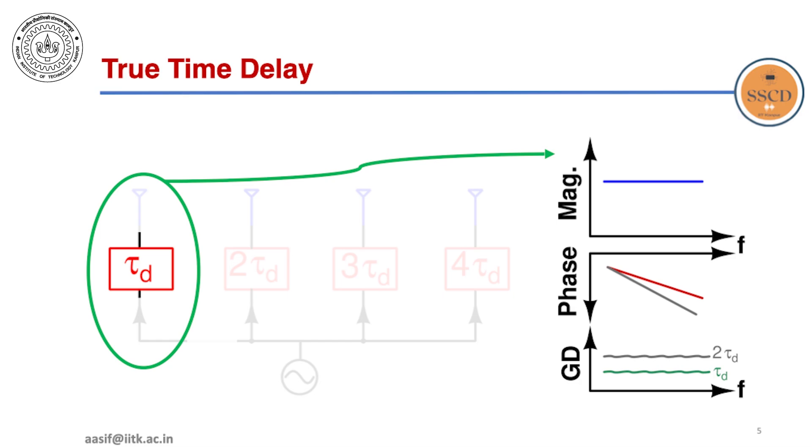The problem boils down to efficient implementation of these delay lines which are supposed to offer constant magnitude and linear phase response over a desired frequency range.